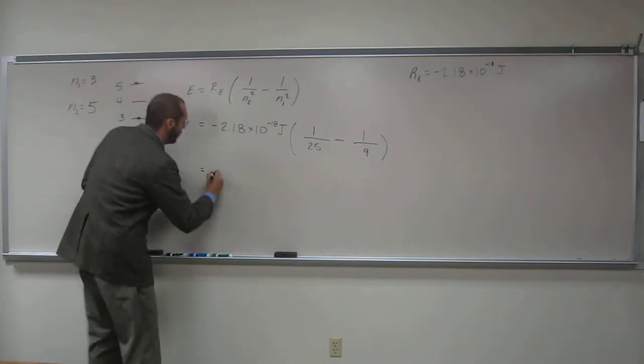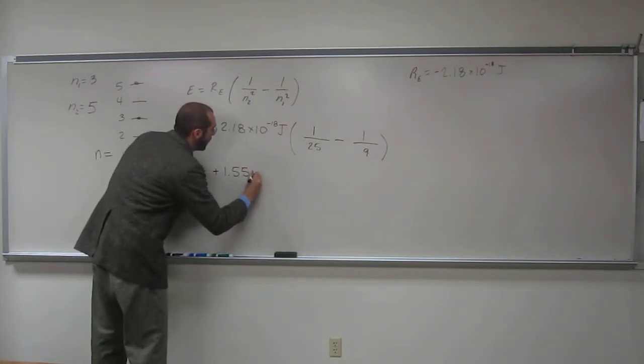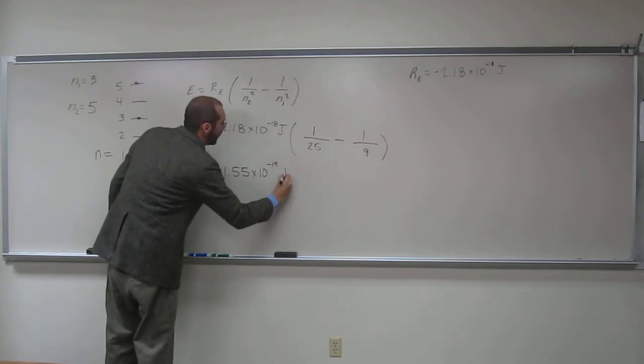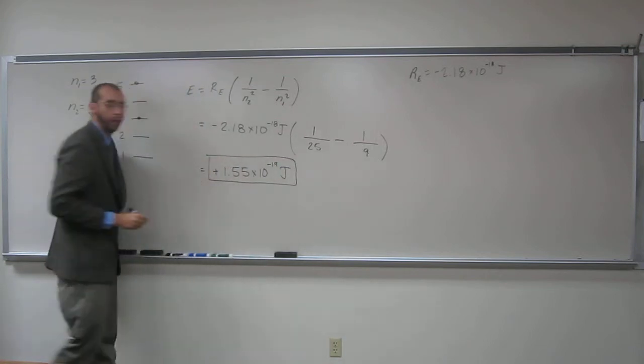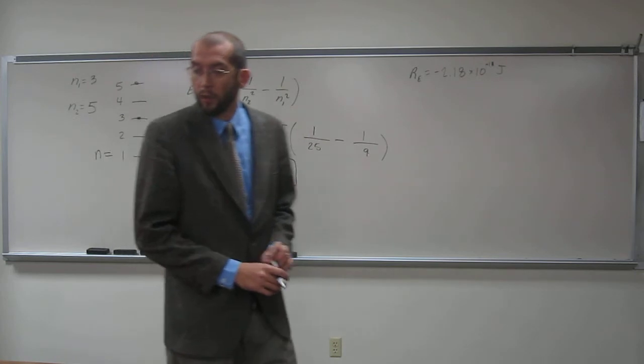And what did we get? Positive 1.55 times 10 to the negative 19 joules. Like we should have expected we would have, right? Because we went exactly that far down the ladder last time, right? So we have to go that far up the ladder.